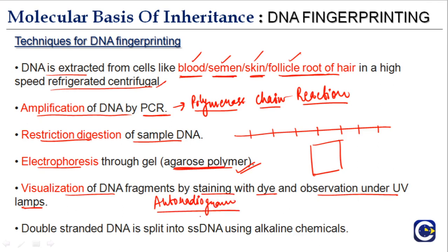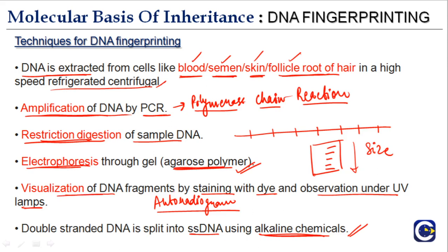The autoradiogram is essentially the sequence of DNA on the agarose gel that is transferred and observed by staining with dye under UV lamps. Double-stranded DNA is split into single-stranded DNA using alkaline chemicals. To summarize the steps sequentially: extraction of DNA, amplification, restriction digestion to cut DNA into smaller pieces, electrophoresis to separate DNA by size, and then visualization.